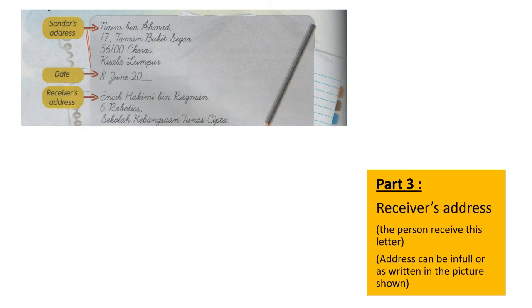Part 2: you must have the date. Write the date of the day you write the letter. Part 3 is the receiver address. Who is the receiver of this letter? If you want to write to your teacher, use the examples given. But if you write to another person, you have to write their full name and then their address.